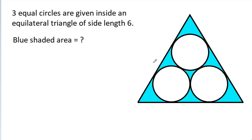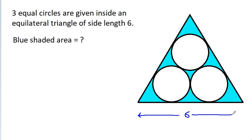In this video, we have been given three equal circles inside an equilateral triangle of side length 6. We have to find the blue shaded area.